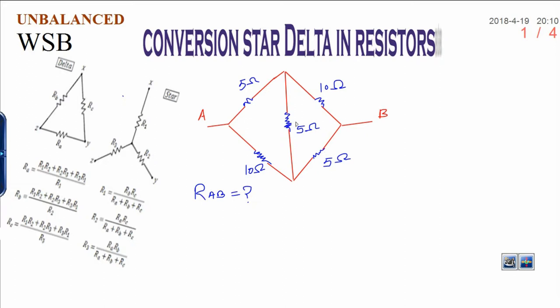In this technique, if you have delta, convert it into star. Let's see, I am converting into star by this way and I am putting this value. This value is A, this value is B, and this value is C.